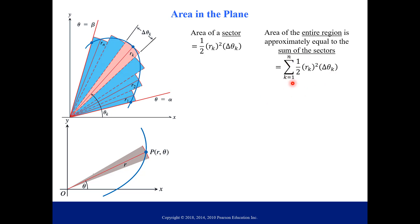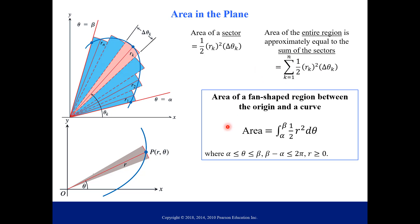Now if we take the limit of this sum, then we can rewrite that using integration, and that would be equal to our area. So here is the area of a fan-shaped region. This is going to be between the origin and a curve. The integral from alpha to beta, where alpha and beta are the angles that your region is between, a starting point and an ending point in angles. And then it's just the sectors being added up, the area of the sectors. Notice we changed delta theta to d theta.